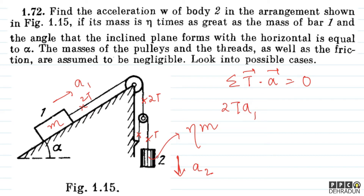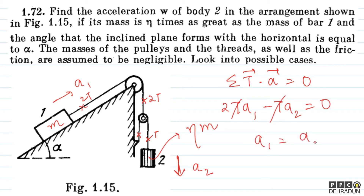For block 2, tension acts upward but acceleration is downward, so we get minus T dot a2 equals zero. From this, a1 equals a2 divided by 2.